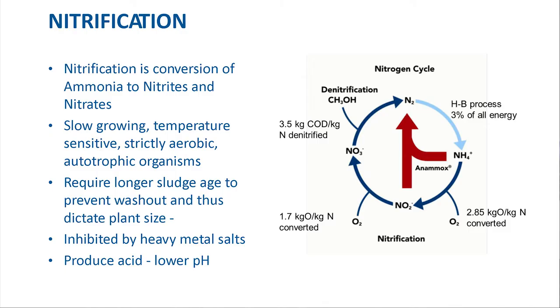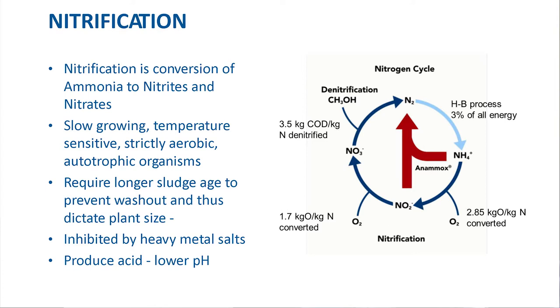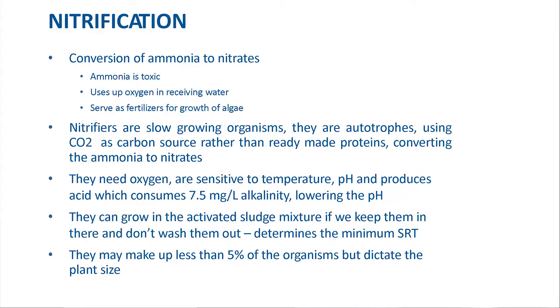About 97 percent of our fertilizer comes from this process. When we break down proteins we have the ammonia, then we spend a lot of energy to convert that to nitrite, then more energy to get it to nitrate, and then more energy in the form of carbon for denitrification. This is a very energy-intensive cycle, and there are shortcut methods to remove nitrogen from wastewater. One reason to do nitrification is that ammonia is toxic to fish in the effluent, uses up oxygen in the receiving water, and serves as a fertilizer for algal growth. For each milligram per liter of ammonia converted as nitrogen, we destroy 7.5 milligrams per liter of alkalinity.